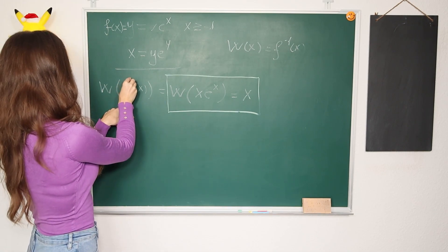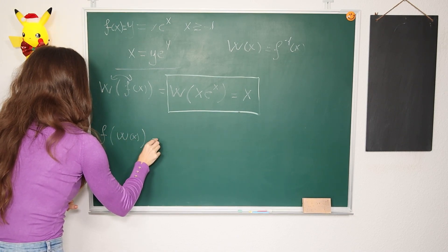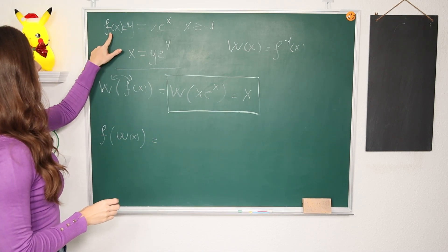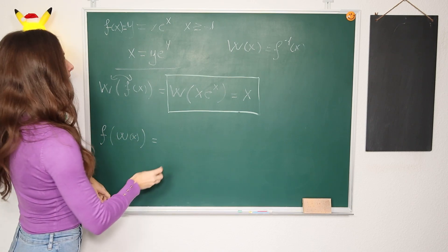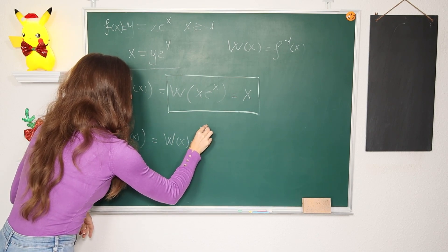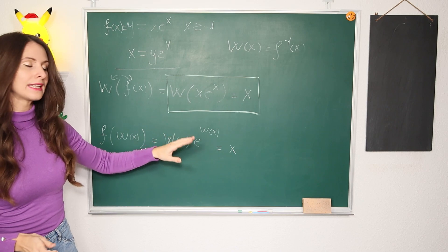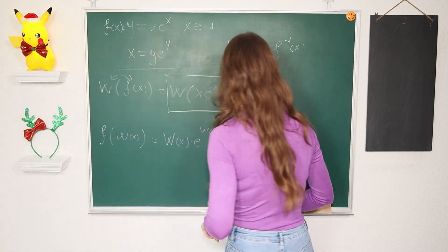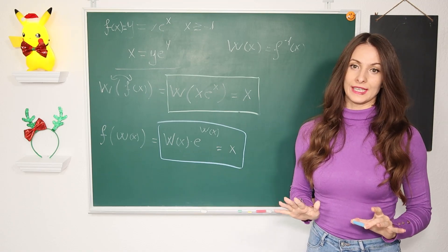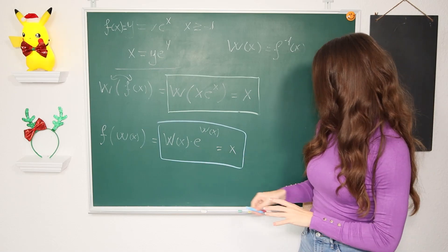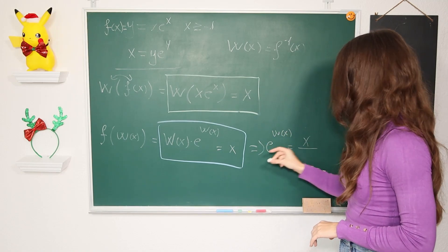Now let's see what we get if we compose f and W. If we have f(W(x)), our function f(x) is x·e^x, so we replace x by W(x) and get W(x)·e^(W(x)), which equals x. These two are inverse functions, so we get x back. This also gives us that e^(W(x)) = x / W(x), which we'll use in a later example.